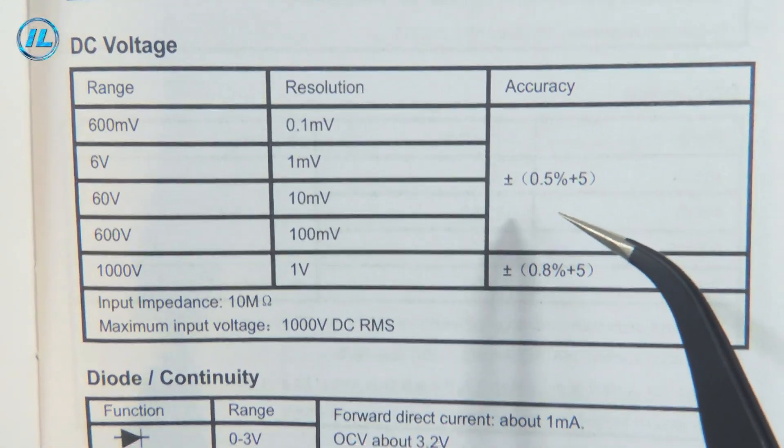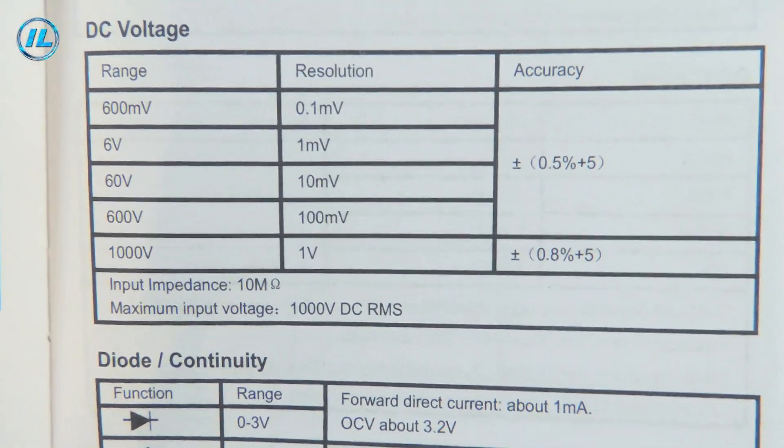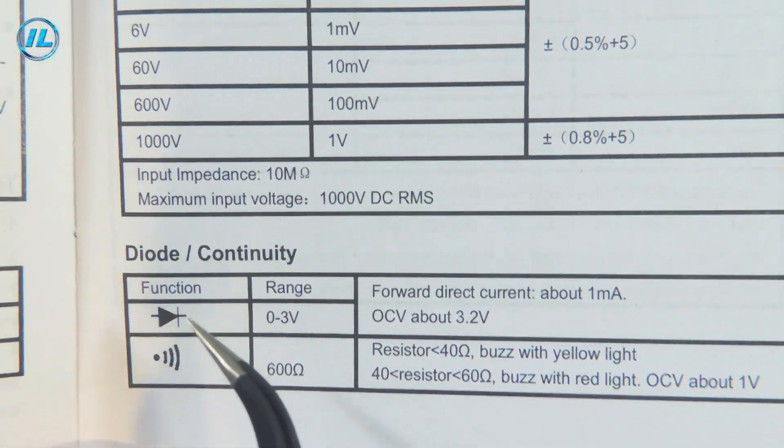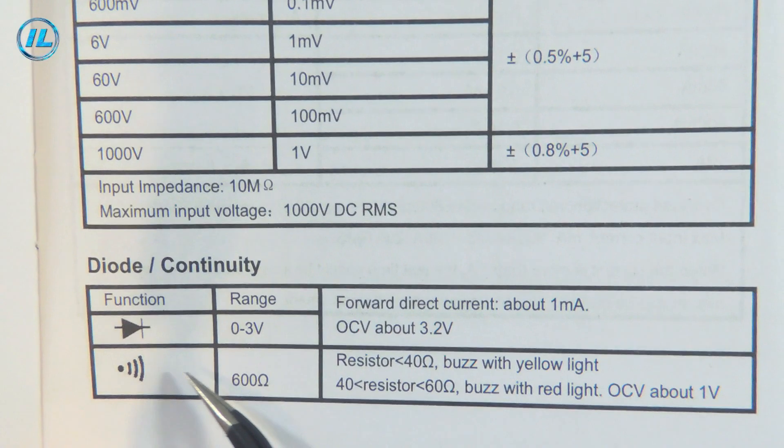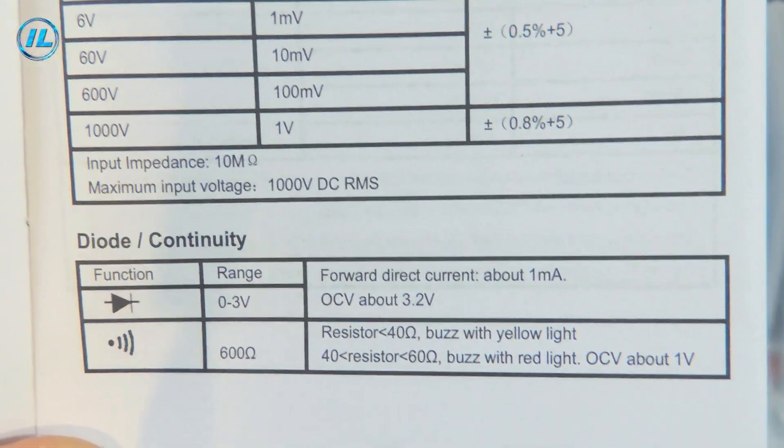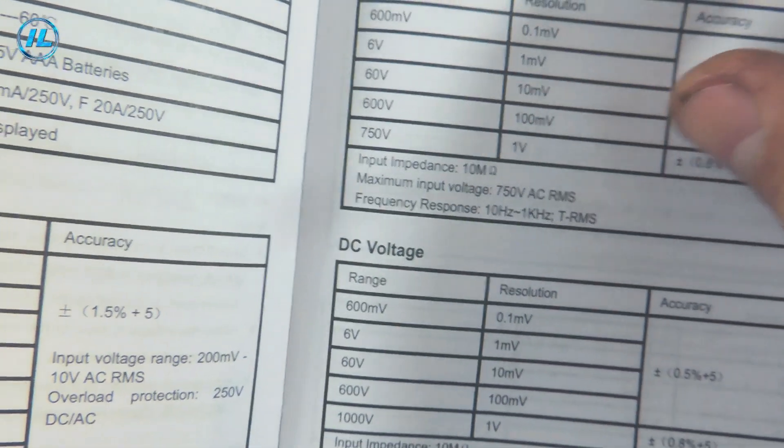The multimeter has standard functions of checking diodes with a voltage of 3 volts on the probes, as well as checking the electrical circuit with an audible signal.